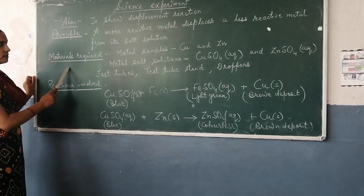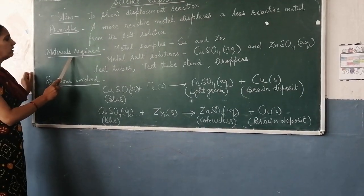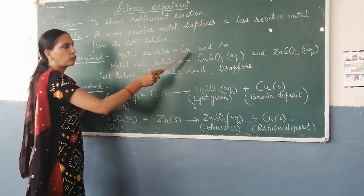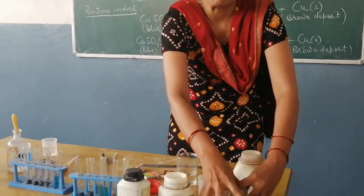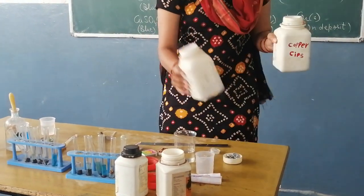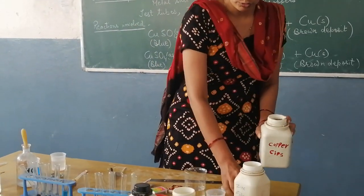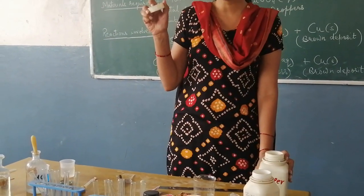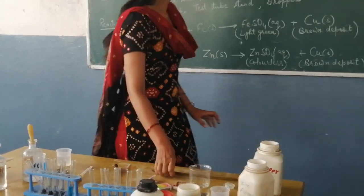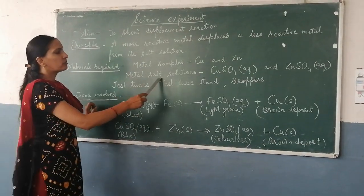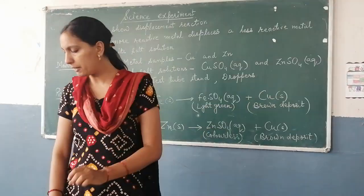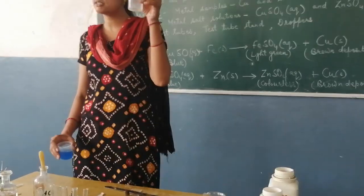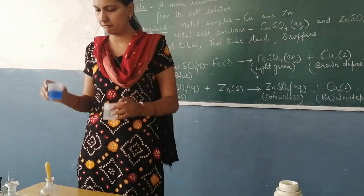What we require for this practical: metal samples copper and zinc. This is copper, and this is zinc. I have shown you the zinc here. Next, metal salt solutions: copper sulfate and zinc sulfate. I have prepared two solutions. This is zinc sulfate and this is copper sulfate.